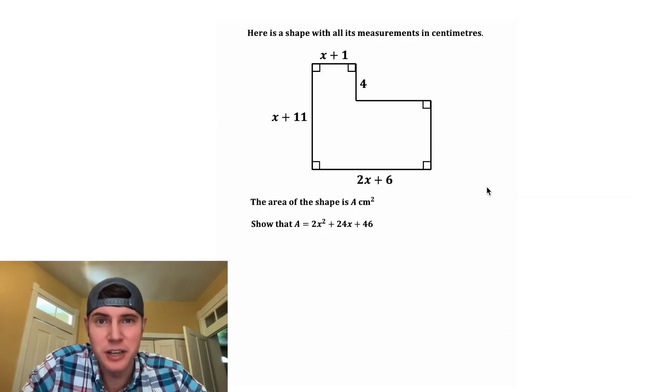So this is the problem exactly as it was given to me. We have a shape here with some of the measurements in terms of x, and it says the area of the shape is A centimeter squared, and we want to show that A is equal to 2x squared plus 24x plus 46.